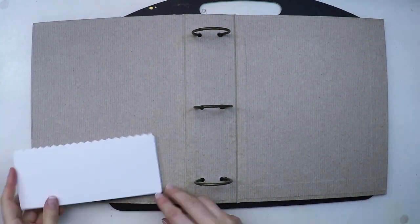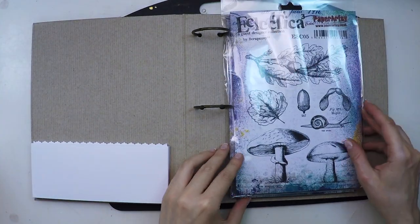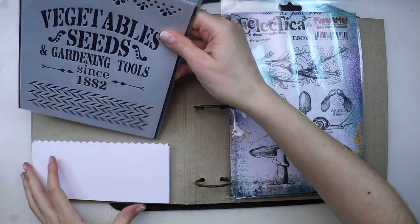So that's it, this is the base and this is how I'm planning to use it. Stencils on the pocket and stamps bound on the side.